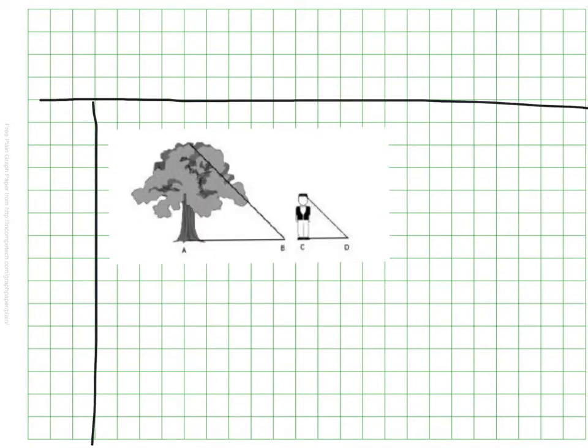But sometimes we need to use our knowledge of similar figures to calculate measurements we can't actually reach and can't actually physically measure. Like when something's very high and we can't reach it. Take this tree. I can't reach the top of a tree to measure it, but I can use what I know.